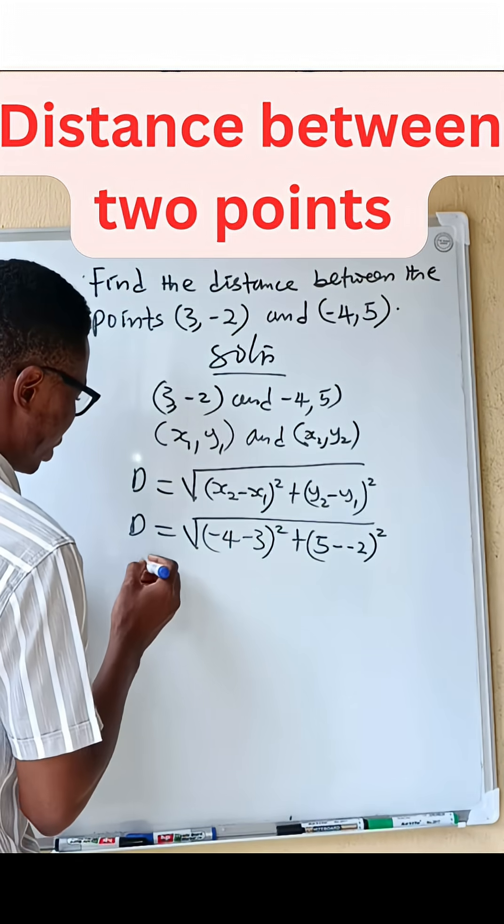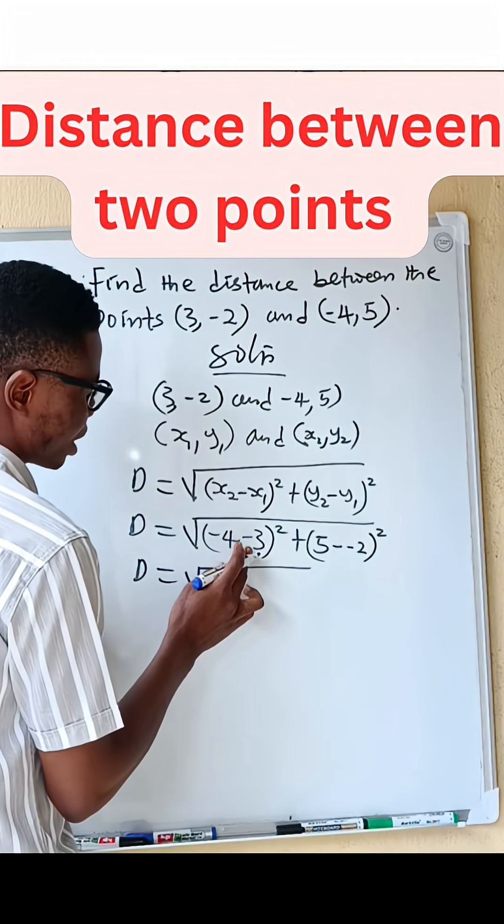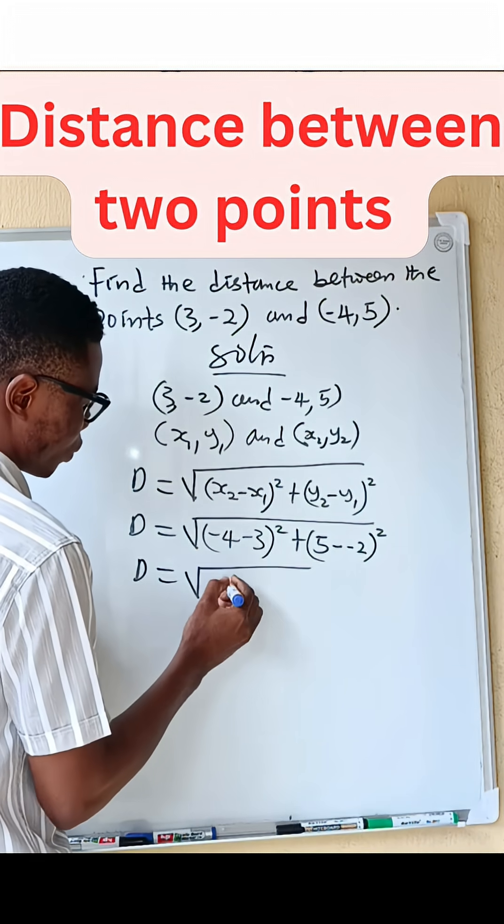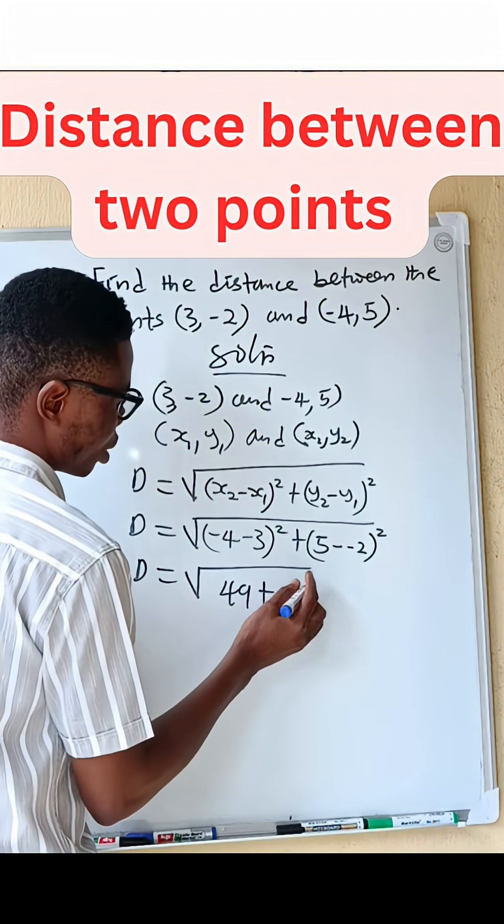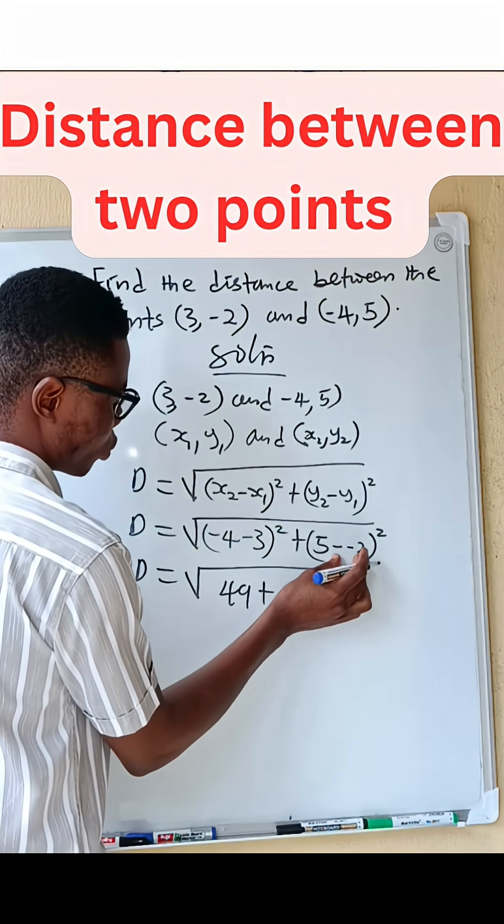You are going to have that D equals square root of -4 minus 3, that is -7 all squared, which is 49, plus 5 minus -2 is going to be positive 5 plus 2.